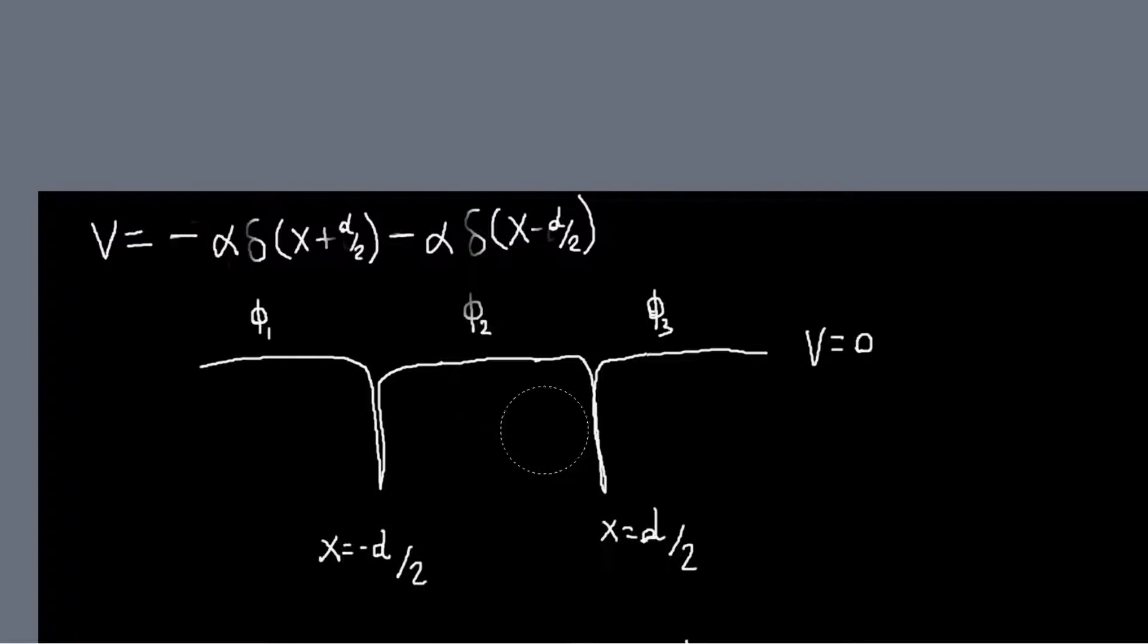From there we can just continue as usual. We'll have three regions that we want to solve our eigenvector equation. So one is to the left of both wells, one's to the right of both wells, and one is in between.